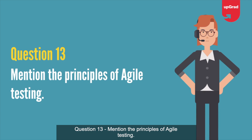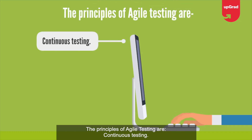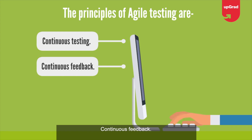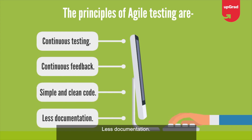Question 13: Mention the principles of Agile testing. The principles of Agile testing are: continuous testing, continuous feedback, simple and clean code, and less documentation.